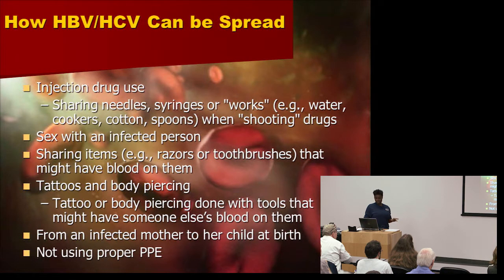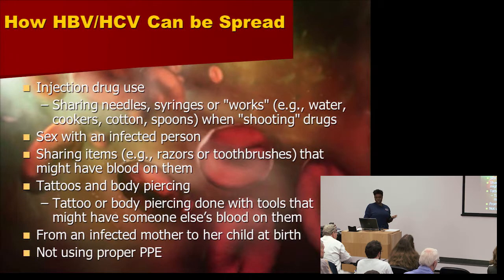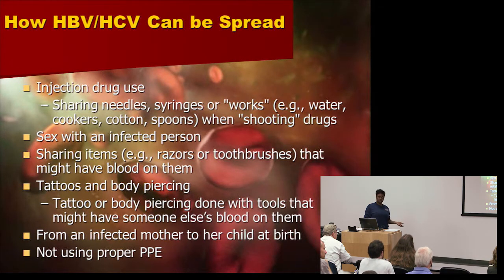Other transmission risks include sex with an infected person, sharing items such as razors and toothbrushes that may have blood on them, tattoos and body piercings done with tools that might have someone else's blood on them, from an infected mother to her child at birth, and not using proper PPE.